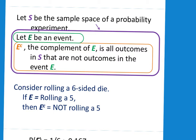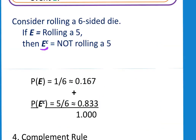For instance, if we're rolling a six-sided die, if the event E means rolling a 5, then the complement of E, which is how we read this, the complement of E is not rolling a 5. The probability of rolling a 5 on a six-sided die is one-sixth, or approximately 0.167. And the probability of not rolling a 5 is 5 out of 6, and that's a probability of 0.833. If we add those up, we get 1.